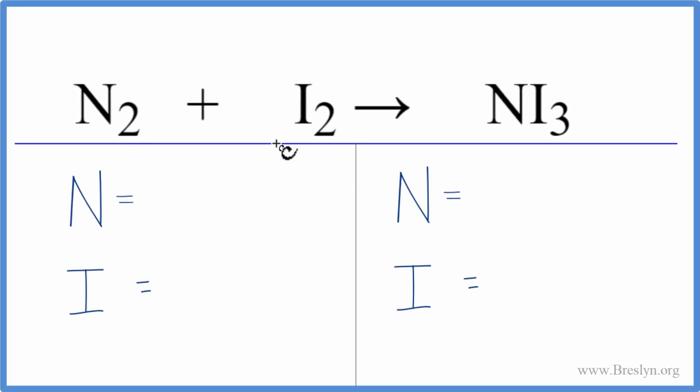In this equation, we have N2 plus I2, that's nitrogen gas plus iodine gas, and we get NI3, nitrogen triiodide.